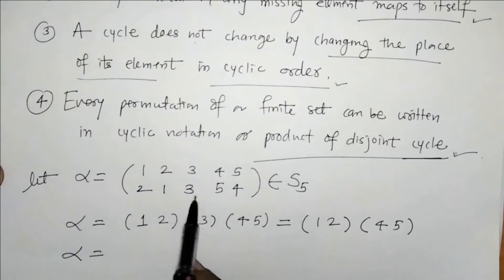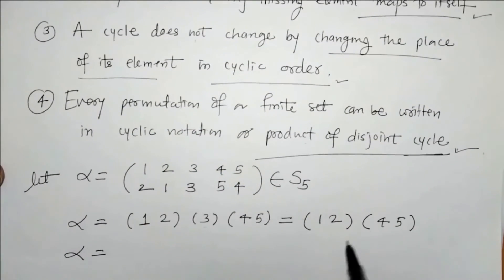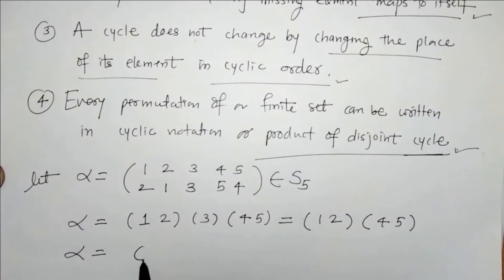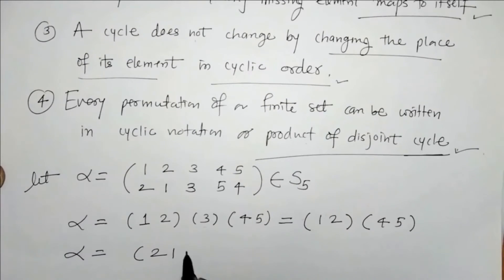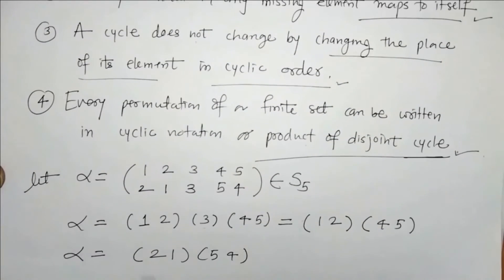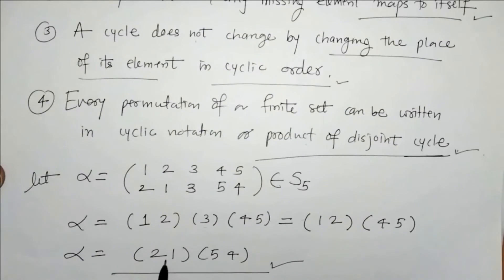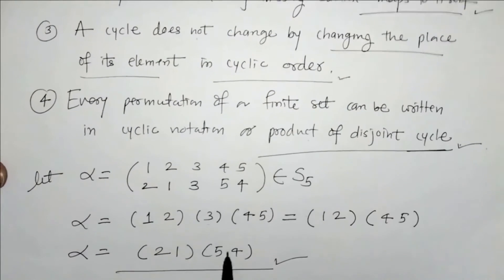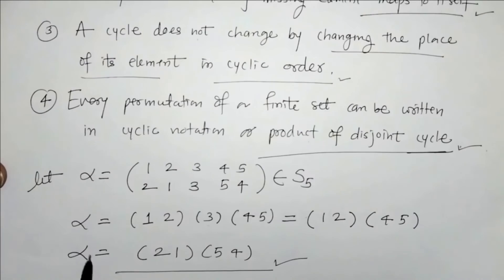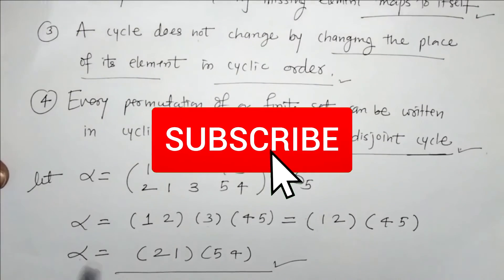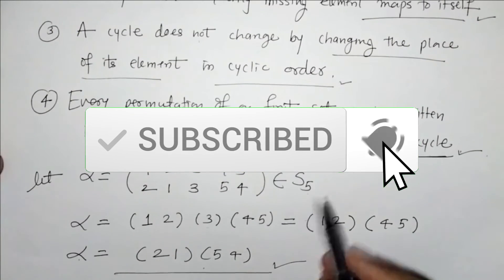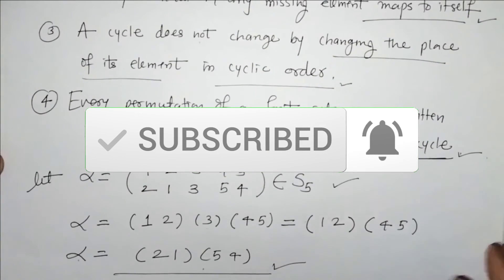We omit the cycle of length 1, so we can write alpha as the product of cycles (1, 2) and (4, 5). So we have written this permutation as a product of 2 disjoint cycles. We can also replace elements in cyclic order. So this is alpha in cyclic notation for the set S5.